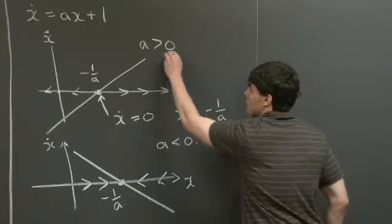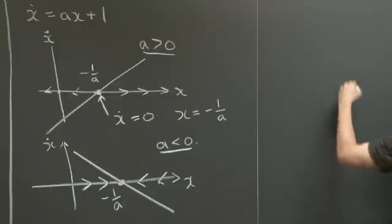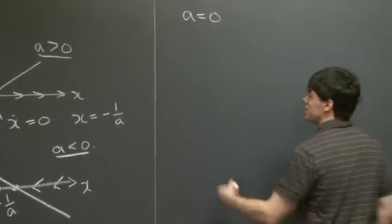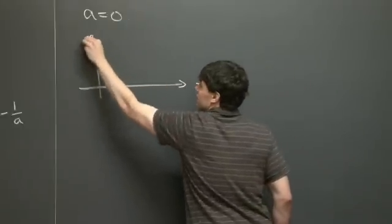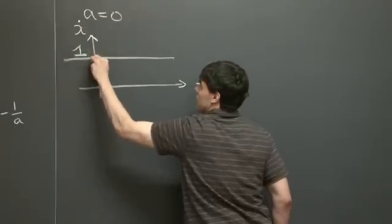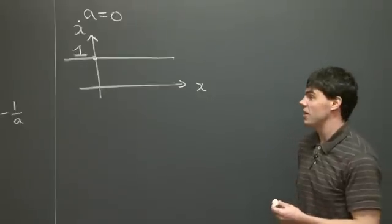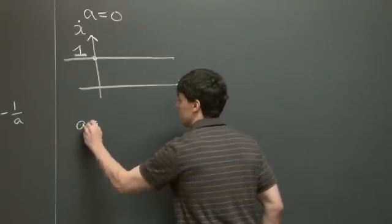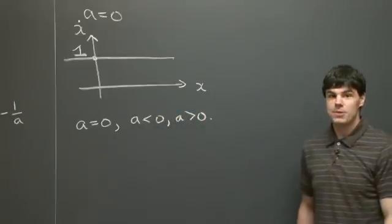So we have two cases right now: one is when a is bigger than 0, and one is when a is less than 0. And of course, there's going to be an intermediate point, which is when a is equal to 0. In this case, the curve x dot versus x is just going to be a straight line that goes through 1. This gives us three regions that determine the long-time behavior: a equals 0, a less than 0, and a bigger than 0. This concludes part A.